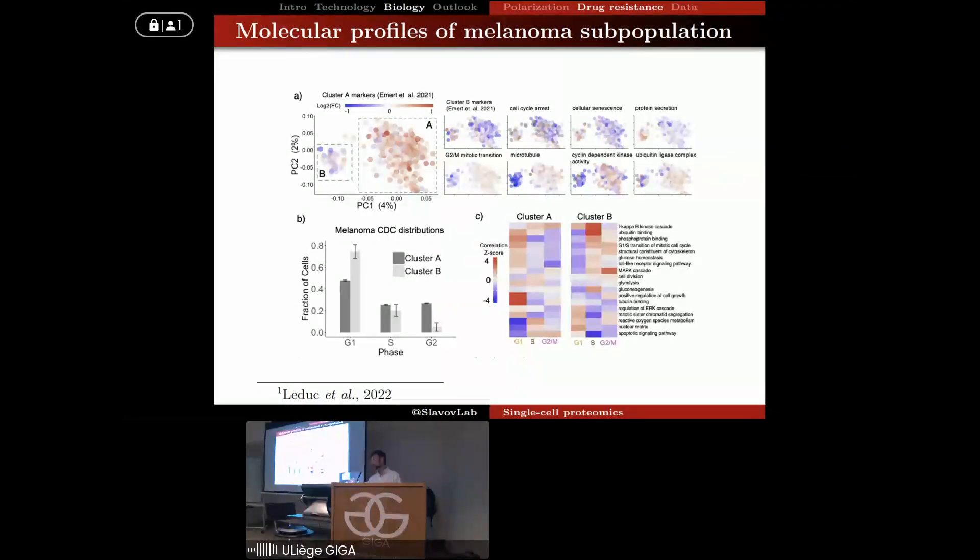And we also find that the smaller cluster tends to correspond to senescent cells that secrete proteins. So these are some of the significant sets of proteins that we identified to be enriched in the smaller cluster, and the larger cluster is more associated with proliferative behavior. So indeed, from the single-cell measurements we can also infer the phase of the cell division cycle of each cell. And based on this analysis, we can confirm that the senescent cells, the cells that are primed for drug resistance, are mostly in G1 phase, and they don't divide as actively as the non-primed cells.